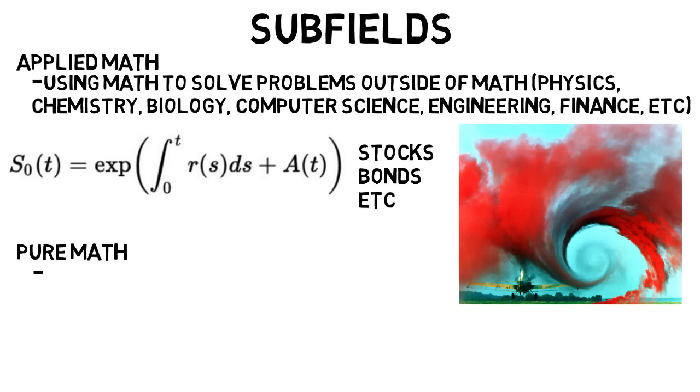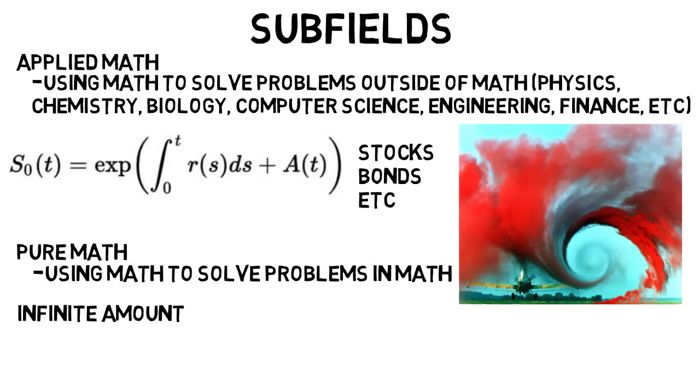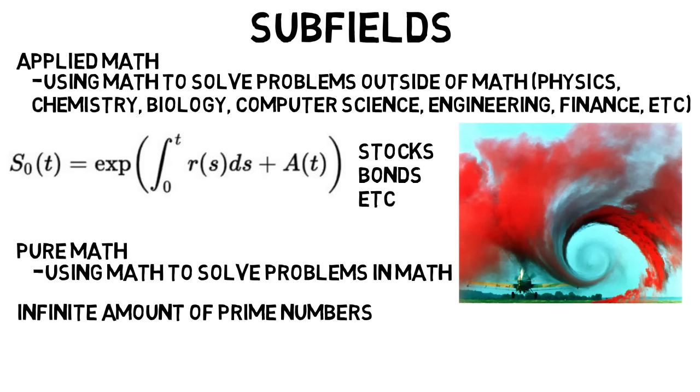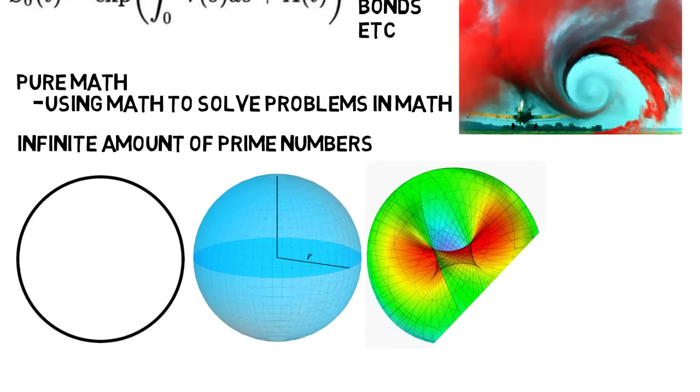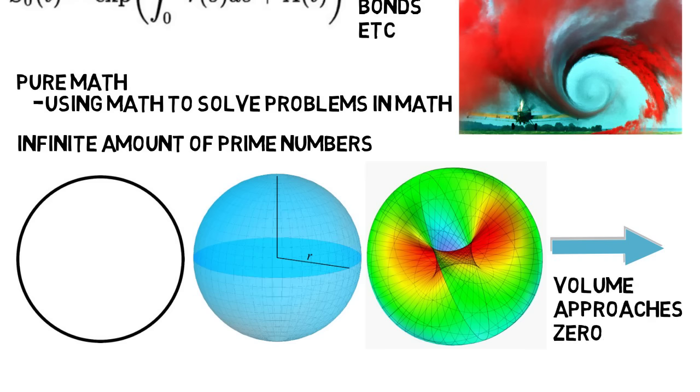Then Pure Math is about using math to solve problems in mathematics. This can range from proving there are an infinite amount of prime numbers, which they have done, to how as you go from a disk to a sphere to higher dimensional spheres, which all consist of space containing points all equidistant from one point. As the dimensions get higher and approach infinity, the volume approaches zero as you keep the radius constant.